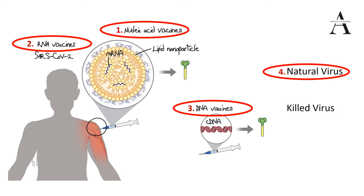Traditionally, we have developed vaccines using live attenuated virus - a weakened virus injected into the body so the body develops memory and antibodies. The fourth traditional method uses killed or inactivated virus - where we kill the virus and inject the dead inactive form. For example, the polio vaccine has been developed using both the fourth and fifth techniques.